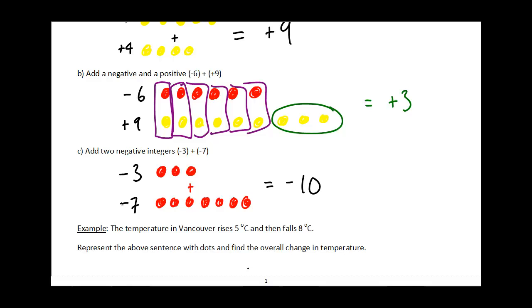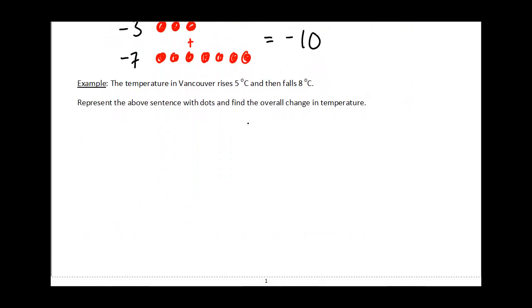In this case, nothing cancels out because they're both negative. Okay, so let's look at this example. The temperature in Vancouver rises five degrees Celsius and then falls eight degrees Celsius. Represent the above sentence with dots and then find the overall change in temperature.